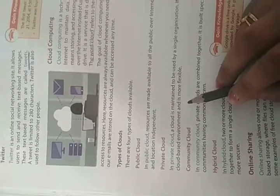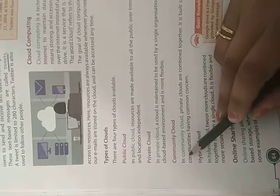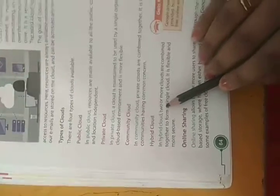Community cloud combines private and public cloud elements, built specifically for various communities having common concerns. Next is hybrid cloud, where two or more clouds are combined together to form a single cloud. It is flexible and more secure.